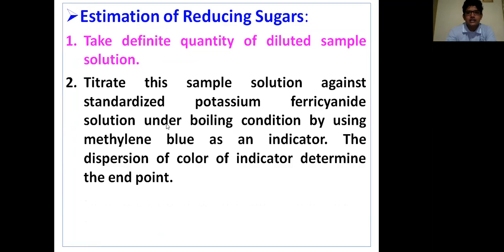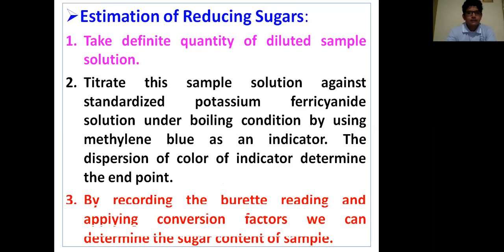Ferricyanide solution under boiling condition by using methylene blue as an indicator. The dispersion of color of indicator determines the end point. By recording the burette reading and applying conversion factor, we can determine the sugar content of the sample. Basically, by using this redox titration we can determine the amount of sugar present in the honey.